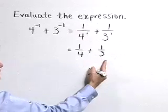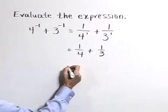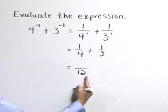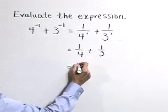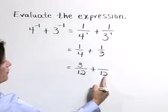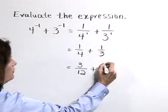Let's combine these by getting a common denominator of 12. 4 goes into 12 three times, and 3 times 1 is 3. 3 goes into 12 four times, and 4 times 1 is 4.